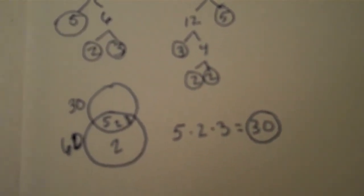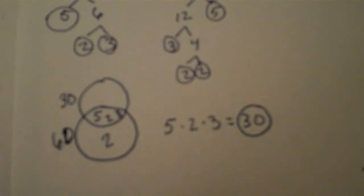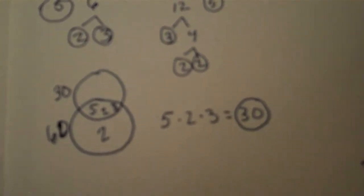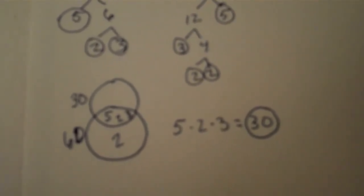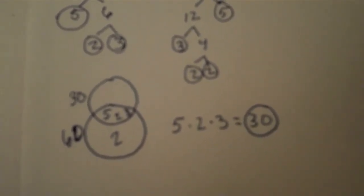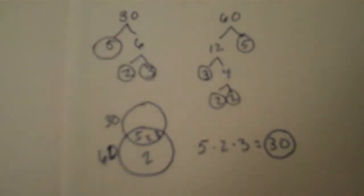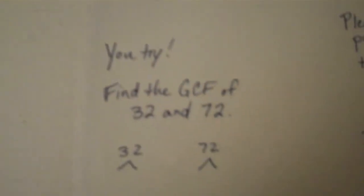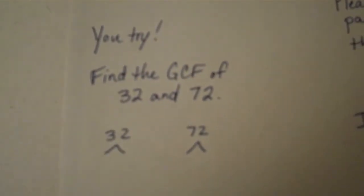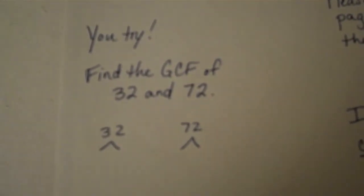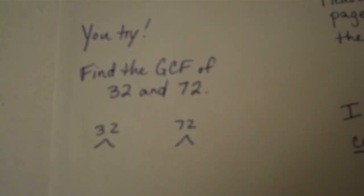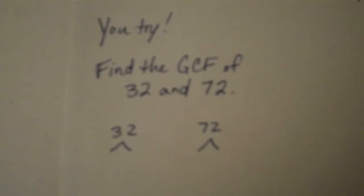Now I'm going to show you a problem and you're going to try it. Pause the video while you solve it, then start again and I'll show you how. Find the greatest common factor of thirty-two and seventy-two. Now pause.